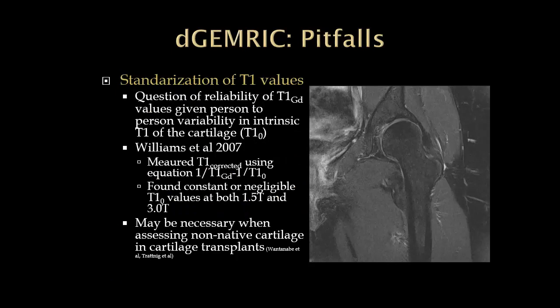Another potential pitfall is standardization of T1 values. There has been question in the literature about the reliability of T1 gadolinium values given person-to-person variability in intrinsic T1 of cartilage, or T1-naught. Williams in 2007 addressed this by measuring a corrected T1 based on post-gadolinium T1 values accounting for the pre-gadolinium intrinsic cartilage T1, and found that T1-naught was very constant or negligible at both 1.5T and 3T. The one exception is when assessing non-native cartilage in cartilage transplant or implant patients, where a pre-contrast T1 value should be obtained.